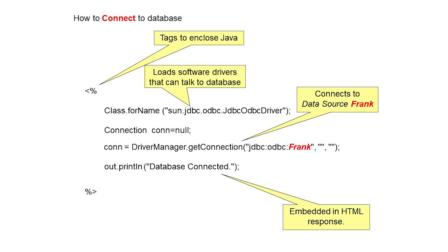In the second line: Connection con = null; — we are creating an object of the Connection class, initially set to null. In the third line: con = DriverManager.getConnection(...); — we are providing the connection string so that the connection will be established. We already loaded the driver in the first line, so DriverManager is available, and we call DriverManager.getConnection to acquire the connection.